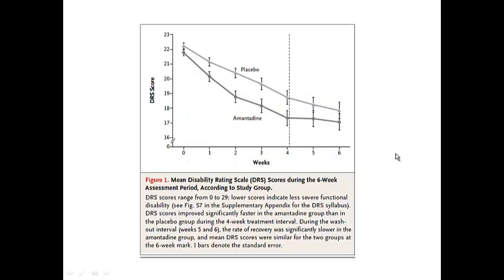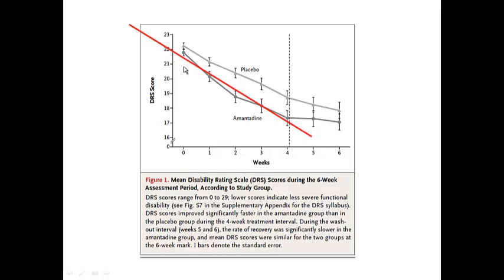They conducted a mixed effect model using random intercepts, meaning each patient has a different intercept, and those intercepts are considered randomly distributed with a mean and standard deviation estimated from the data. They put the weeks variable as a continuous variable, so the slope indicates the average rate of change in DRS per week.